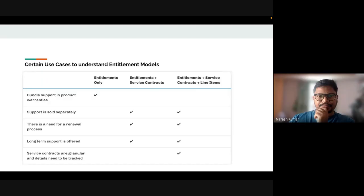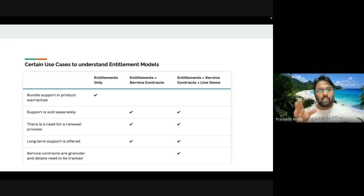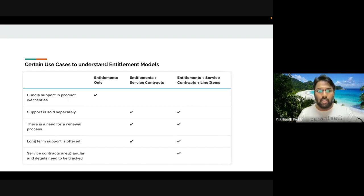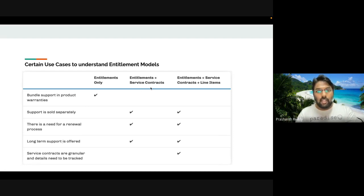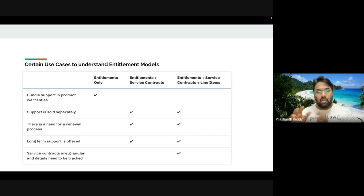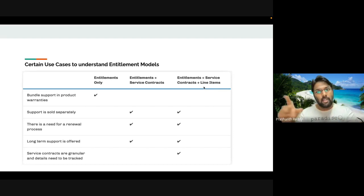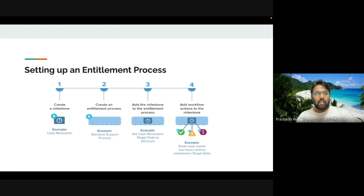Here's a simple chart to visualize how these models work. Entitlements Only is confined to product warranty — once warranty ends, no more support. Service Contracts include renewal processes and longer support based on tenure. Entitlements plus Service Contracts with Line Items goes to a granular level, covering assets related to products for a particular account, providing additional support based on the defined model type.